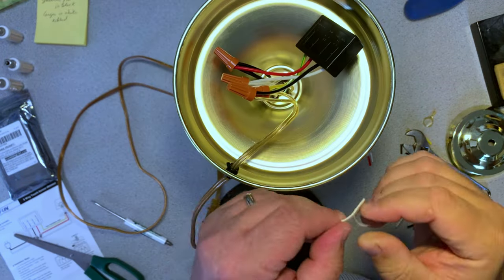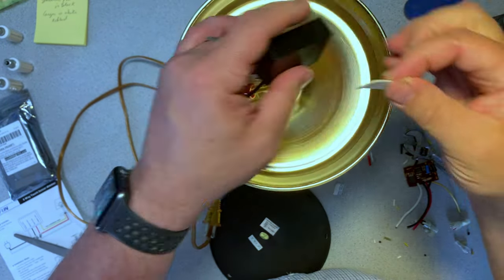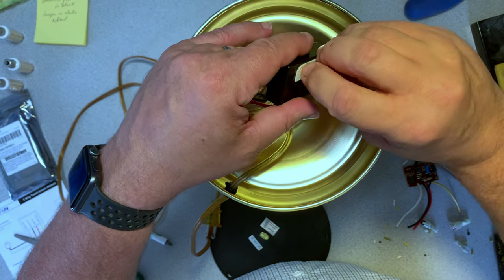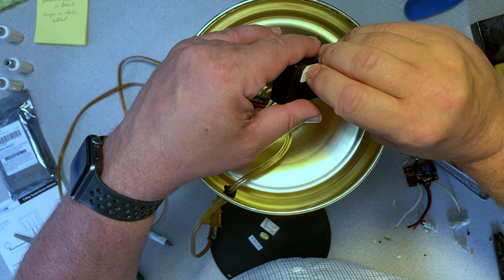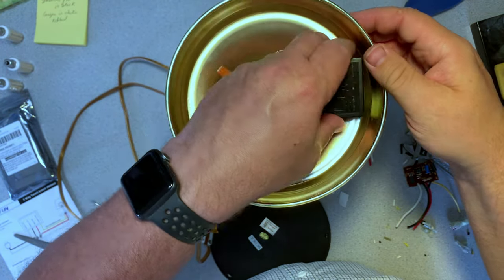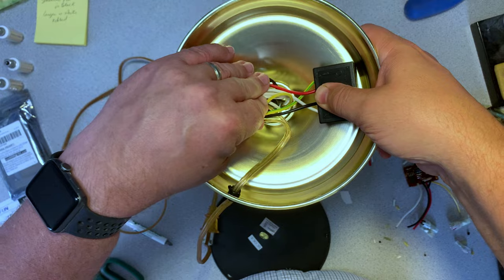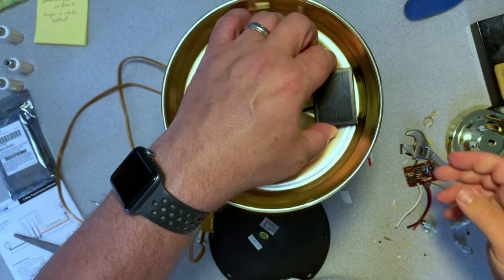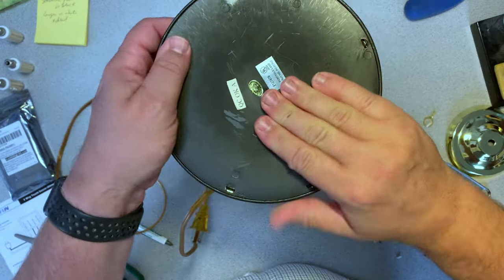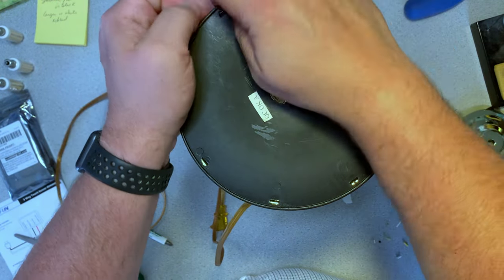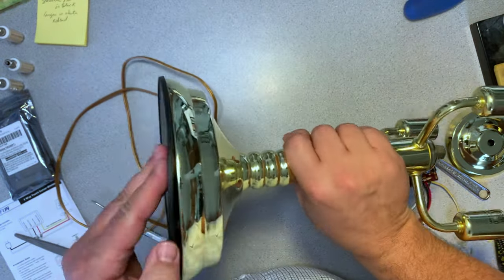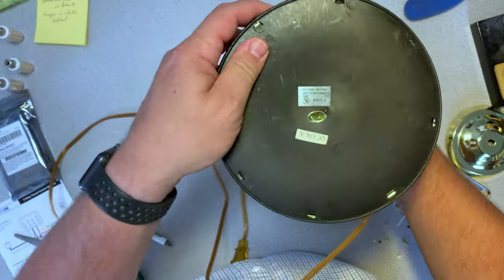The next thing that we need to do is secure the new module to the inside of the base. This is more just so it's not popping around or anything like that. I've got a little bit of foam double sticky tape, and I'm just going to attach the module to it. And the base just snaps back on. Since we were careful on taking it off, all we have to do is snap it back into place.